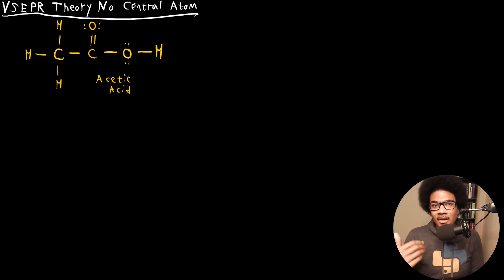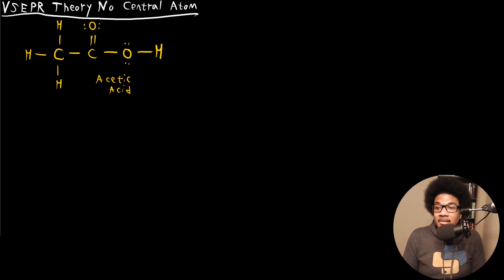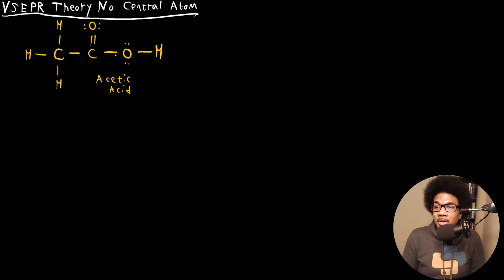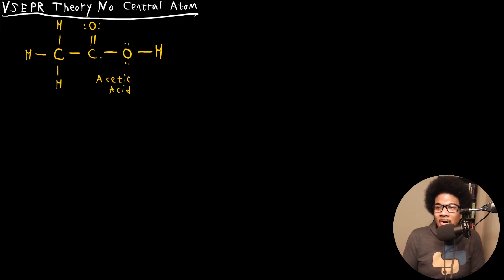What happens when you have a molecule that does not have a clear single central atom? Like the case here of acetic acid — I've given you the Lewis structure for acetic acid. This is the full complete Lewis structure, and we can't really say that one atom is the central atom.